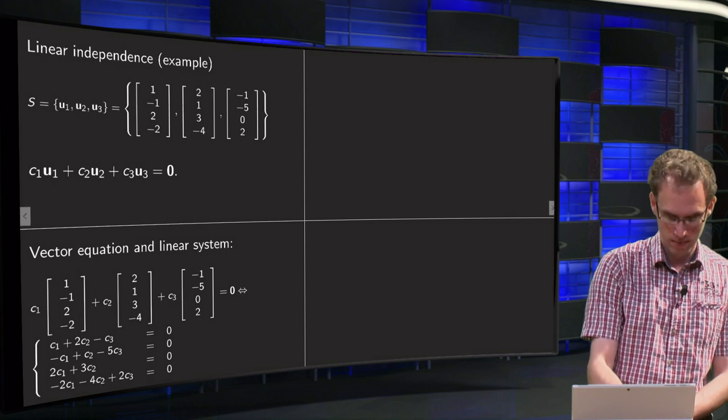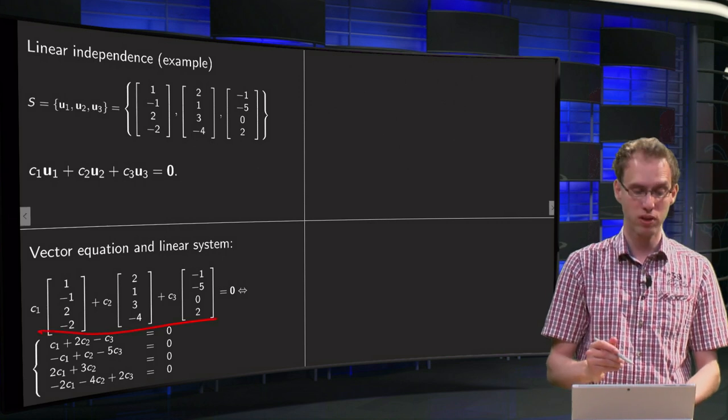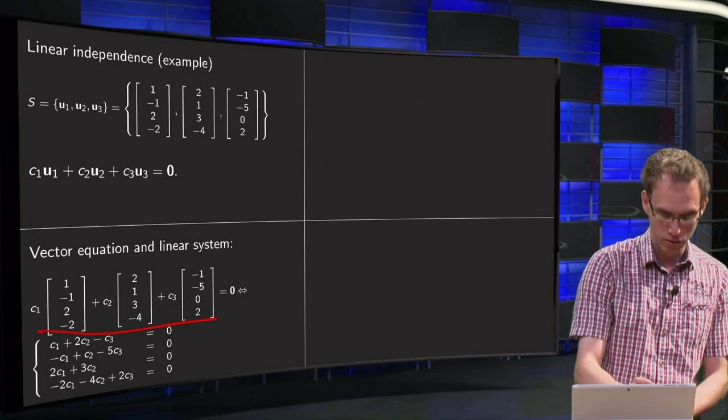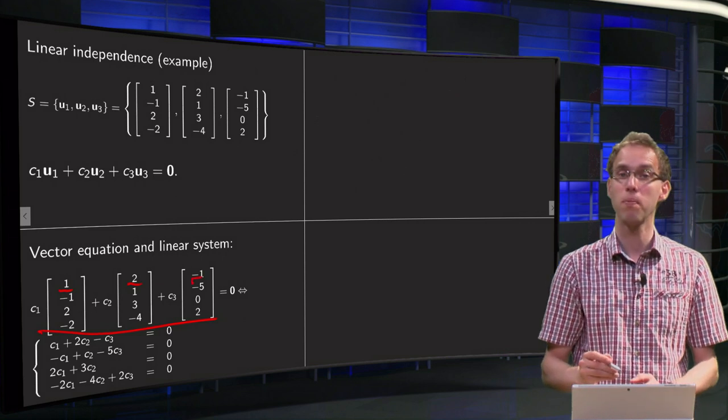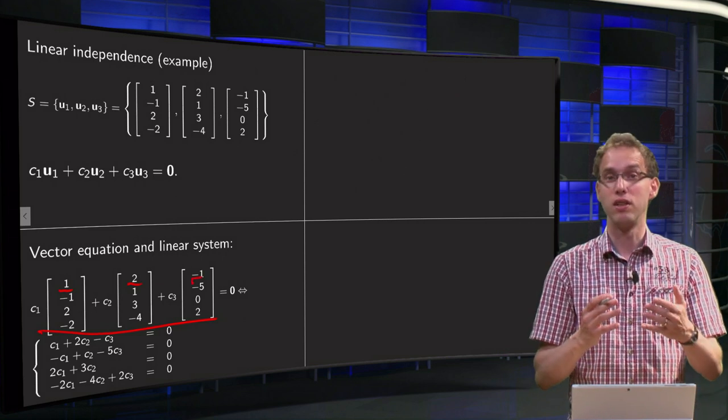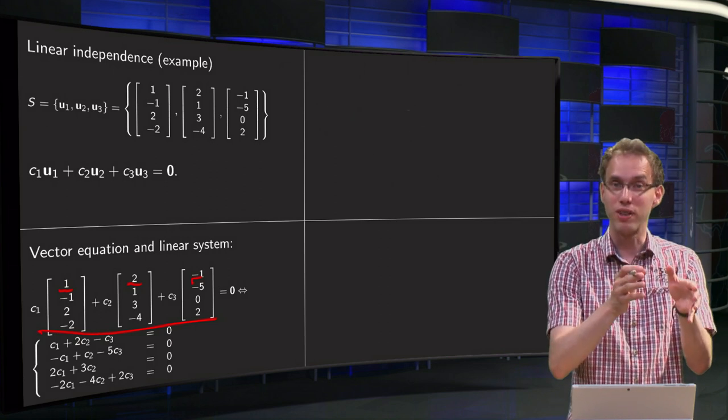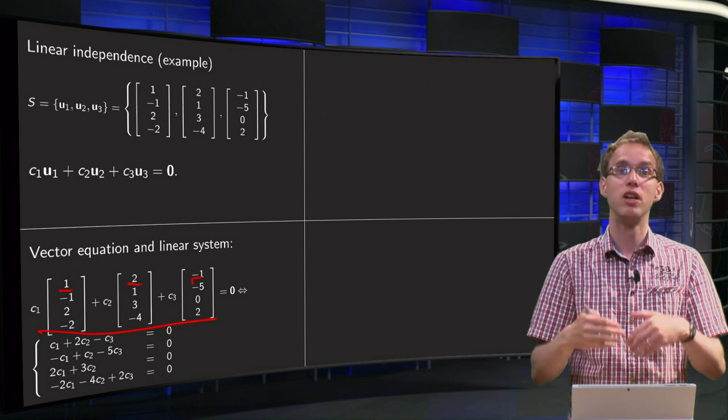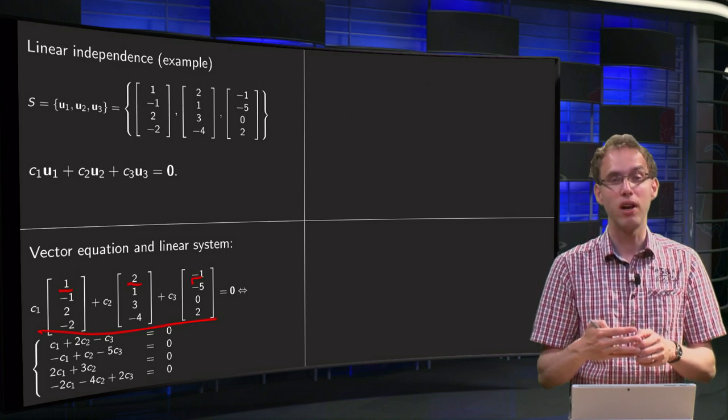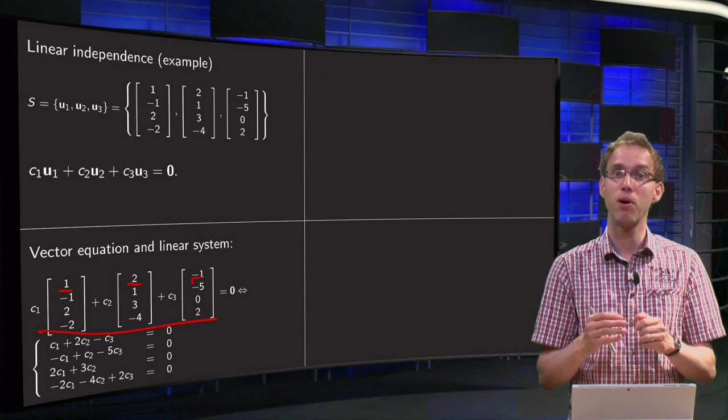We can write the left-hand side as one vector. That vector will get as first component 1 times c1 plus 2 times c2 minus c3 equals 0. The vector on the left-hand side with the c1, c2, and c3 in it, and the one on the right-hand side containing only zeros, those vectors are equal if all their components are zero.